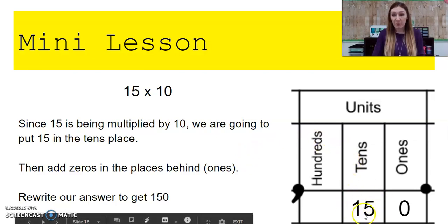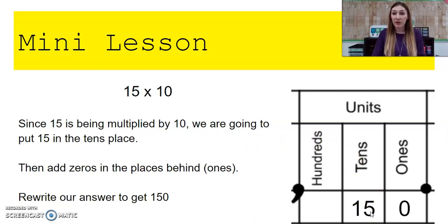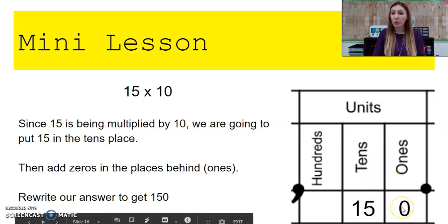Since 15 is being multiplied by 10, we are going to put 15 in the tens place. So if you'll see, I put 15 in my tens place. Then, because we can't have a place empty, we're going to put zeros behind. So because I'm in the tens place, I just need to put one zero in the ones place, and then we'll rewrite our answer to get 150.